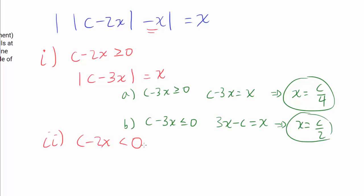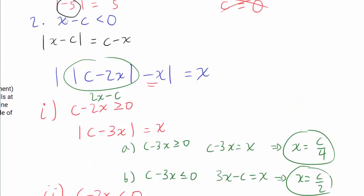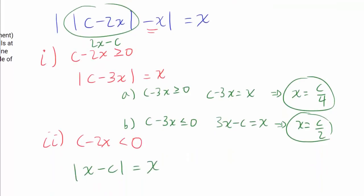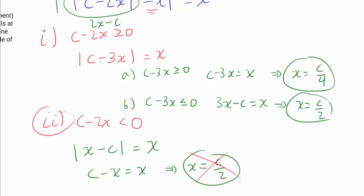Now analyzing the subcase where c minus 2x is less than zero: the absolute value of c minus 2x becomes 2x minus c, and subtracting x gives the absolute value of x minus c equals x. Since we're under the assumption that x minus c is negative, we get c minus x equals x, or x equals c over 2. However, this solution is invalid here because plugging x equals c over 2 into c minus 2x gives zero, not a negative number, so this case requires c minus 2x strictly less than zero. So we discard this duplicate.